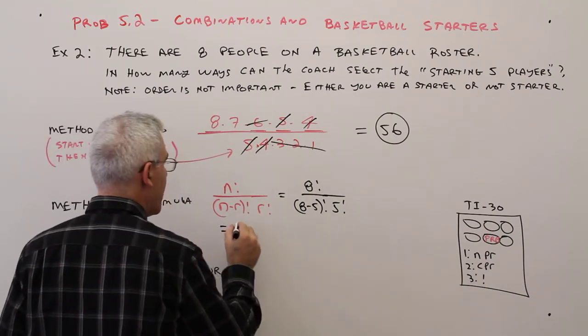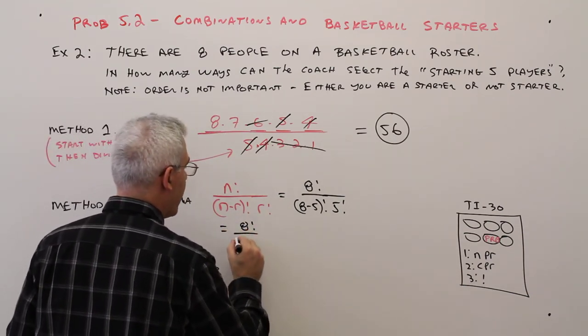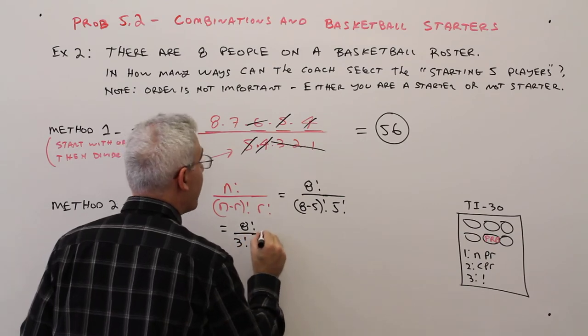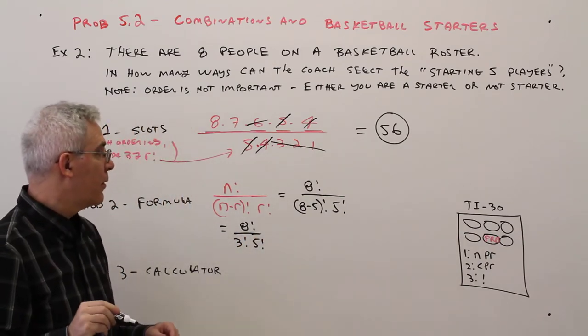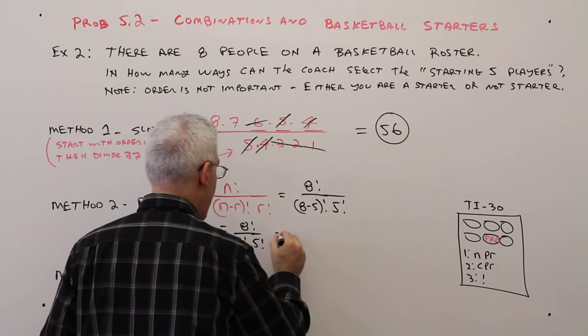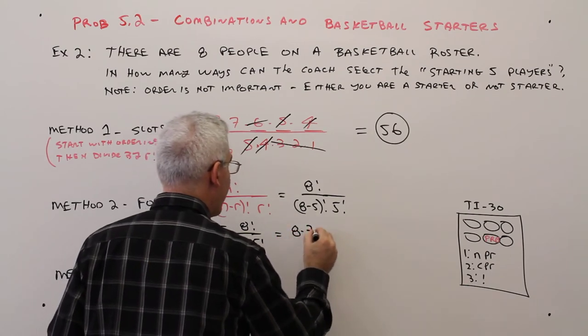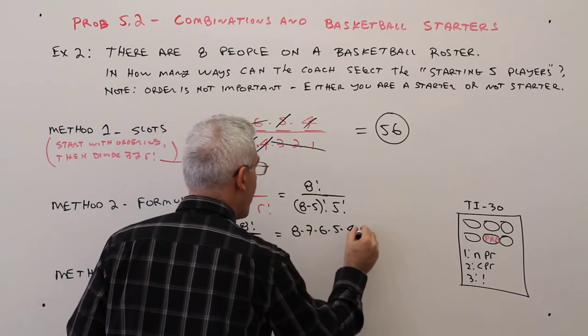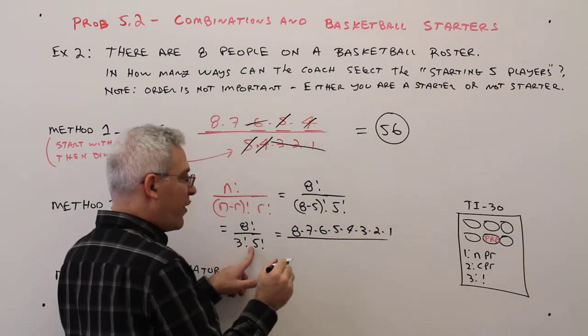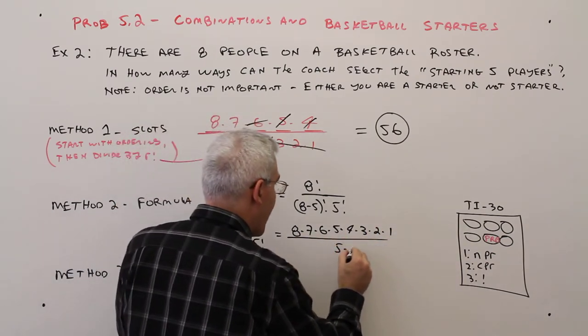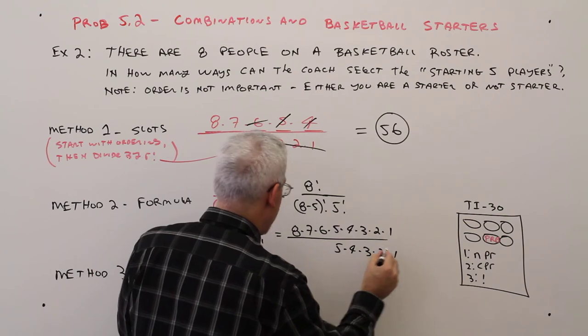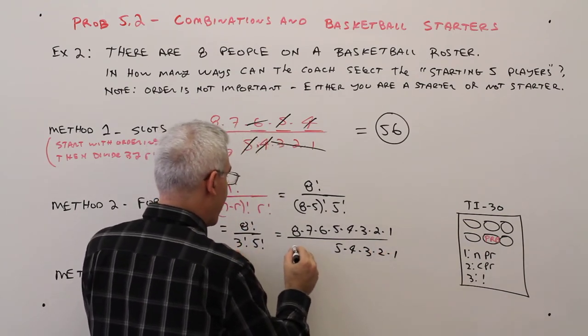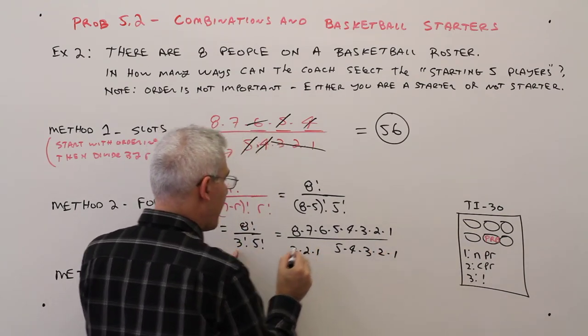So that would be 8 factorial over 3 factorial, 5 factorial. Okay, so let's do this by hand. 8 times 7 times 6 times 5 times 4 times 3 times 2 times 1. I'll put the 5 factorial first, 5 times 4 times 3 times 2 times 1. And the 3 factorial, I'll put over here, 3 times 2 times 1.